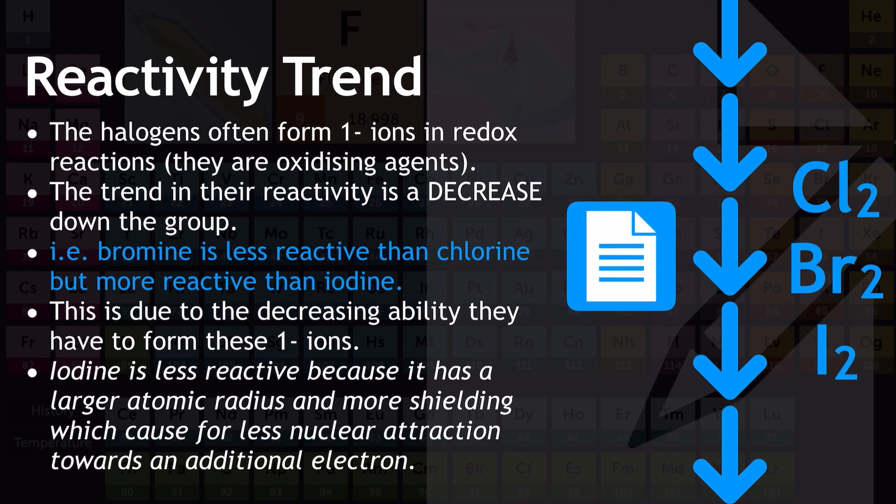Iodine is less reactive because it has a larger atomic radius and more shielding, which means it's got less nuclear attraction towards the additional electron it would need to become the I- ion. And so that explains the trend in their reactivity.